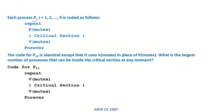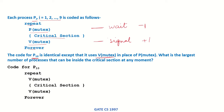Each process pi, where i equals 1 to 9, is coded as follows: repeat forever — an infinite loop — P(mutex), critical section, V(mutex). P is a wait operation that decrements mutex by 1, and V is a signal operation that increments mutex by 1. The code for process p10 is identical except it uses V(mutex) in place of P(mutex). The question is: what is the largest number of processes that can be inside the critical section at any moment?